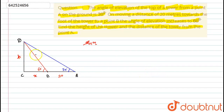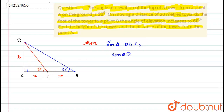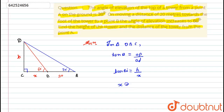Now if I look at the figure, triangles ADC and BCD are right angle triangles, so I can use the tangent property. In triangle BCD, tan theta equals opposite upon adjacent, so tan 60 equals DC over CB, which is H over X. From here, X equals H divided by tan 60, which is H divided by root 3. Let this be equation number 1.